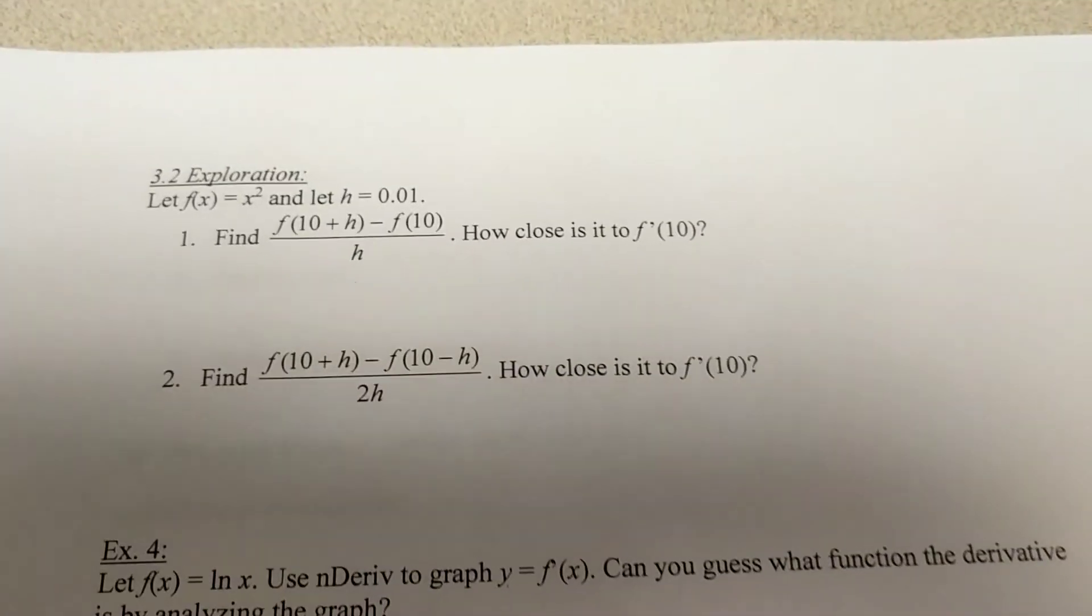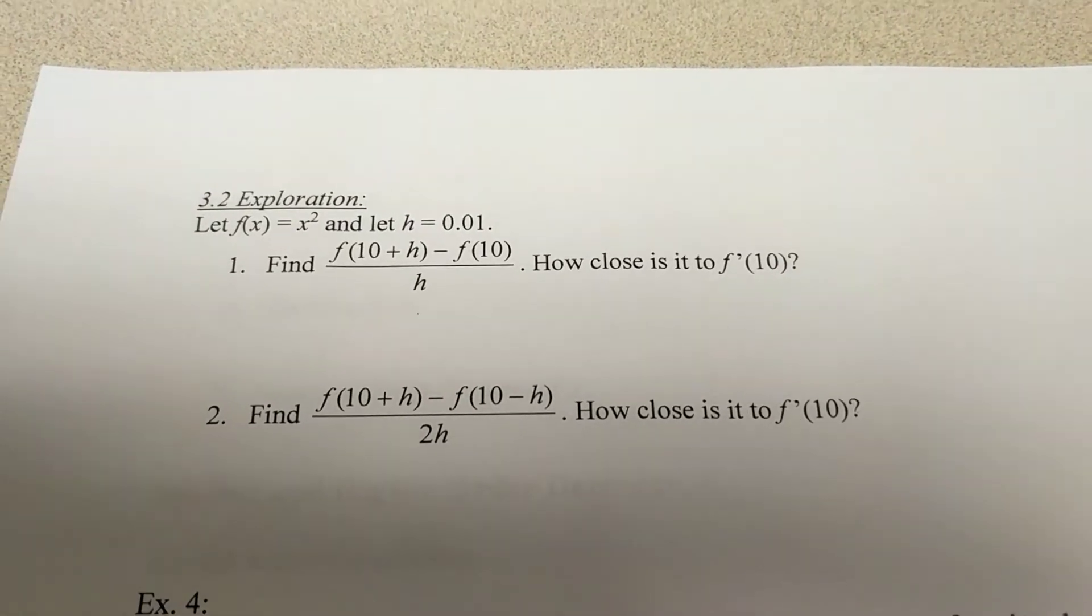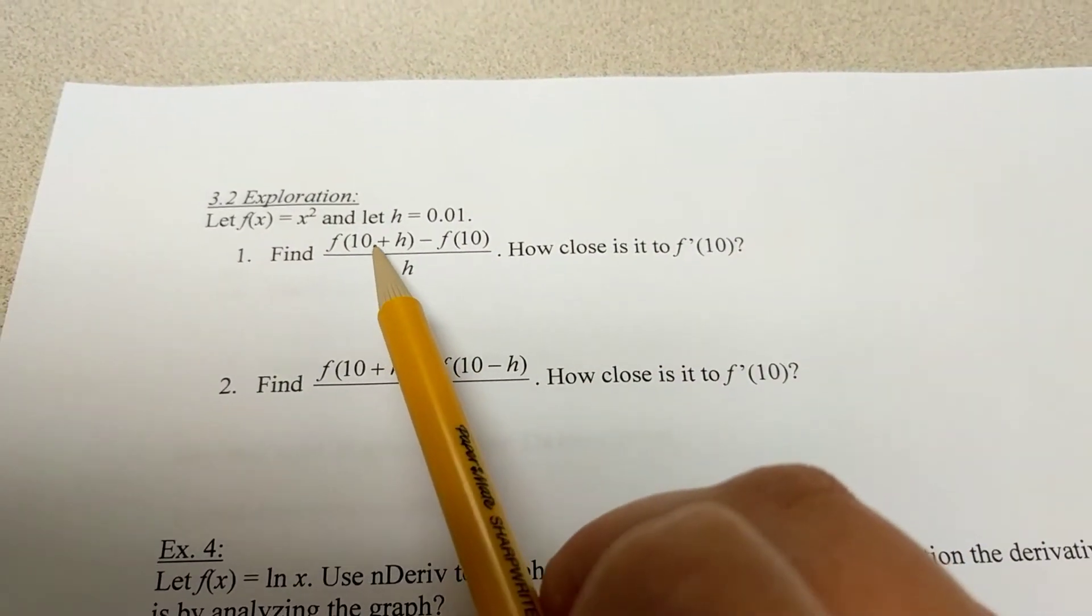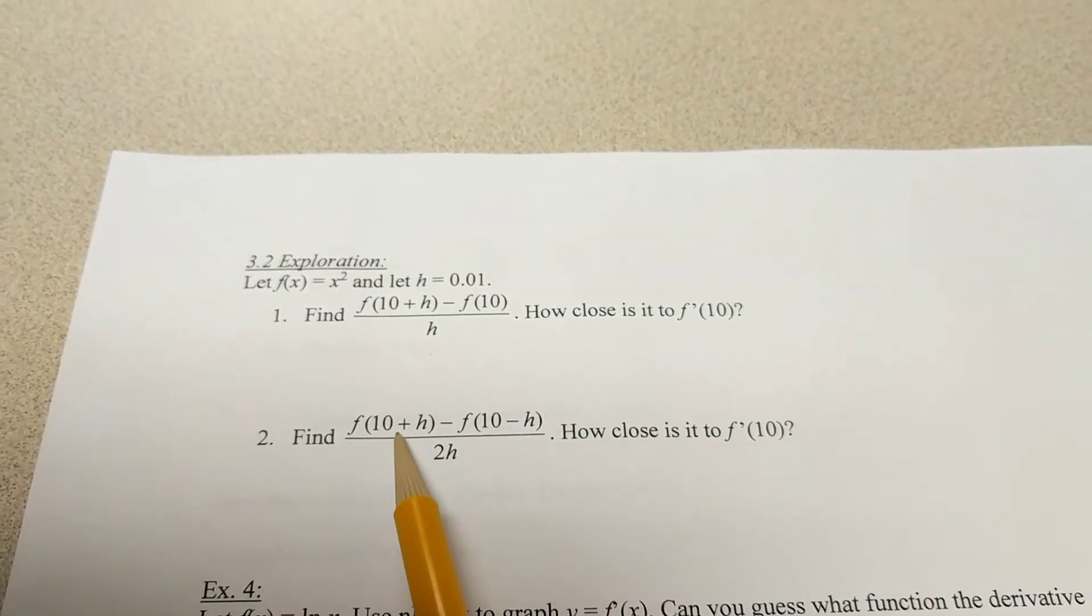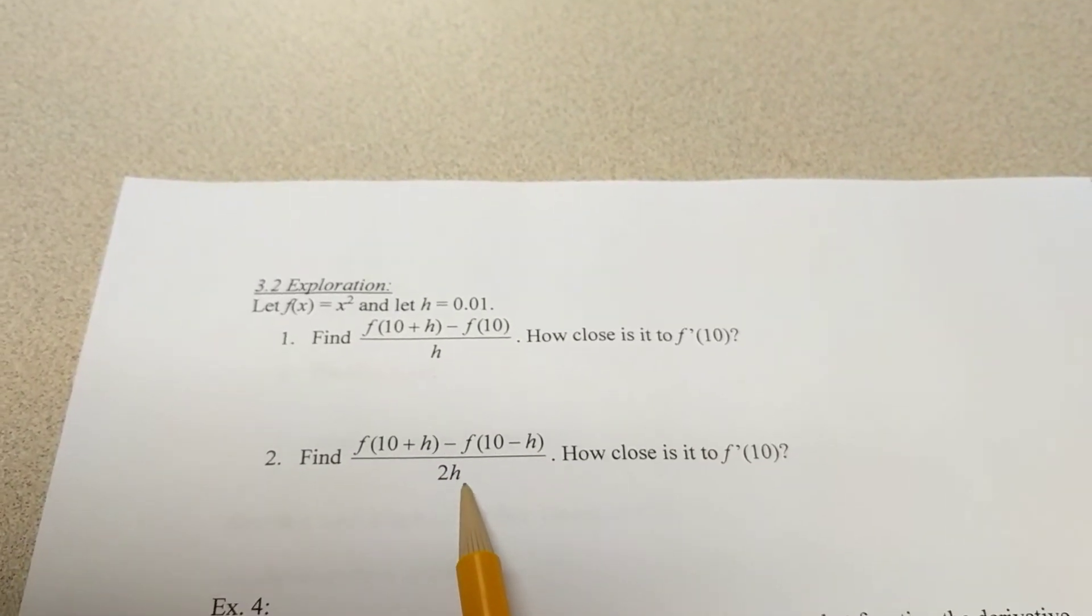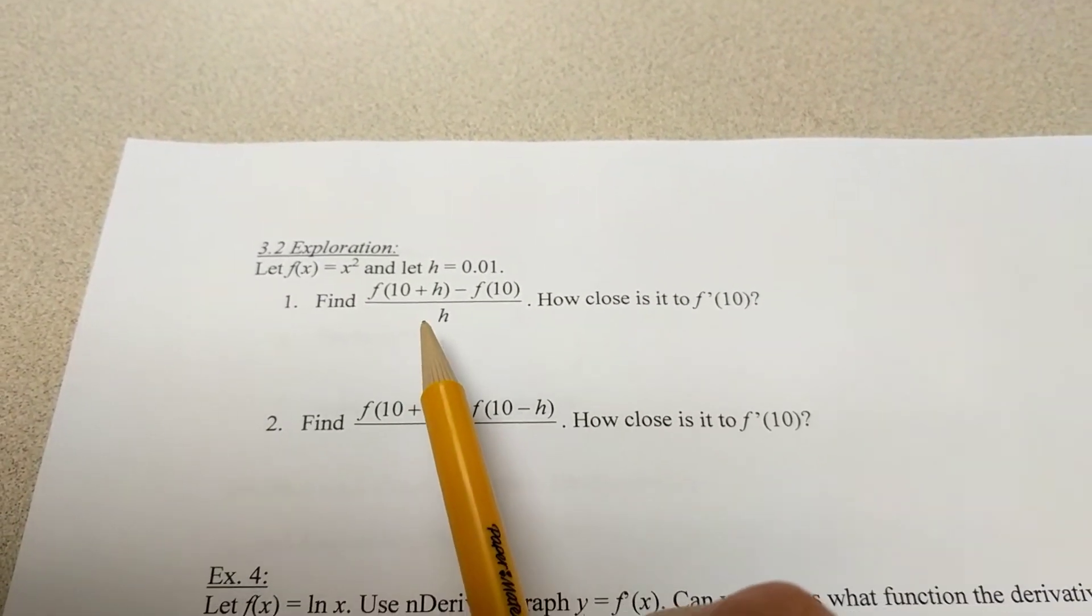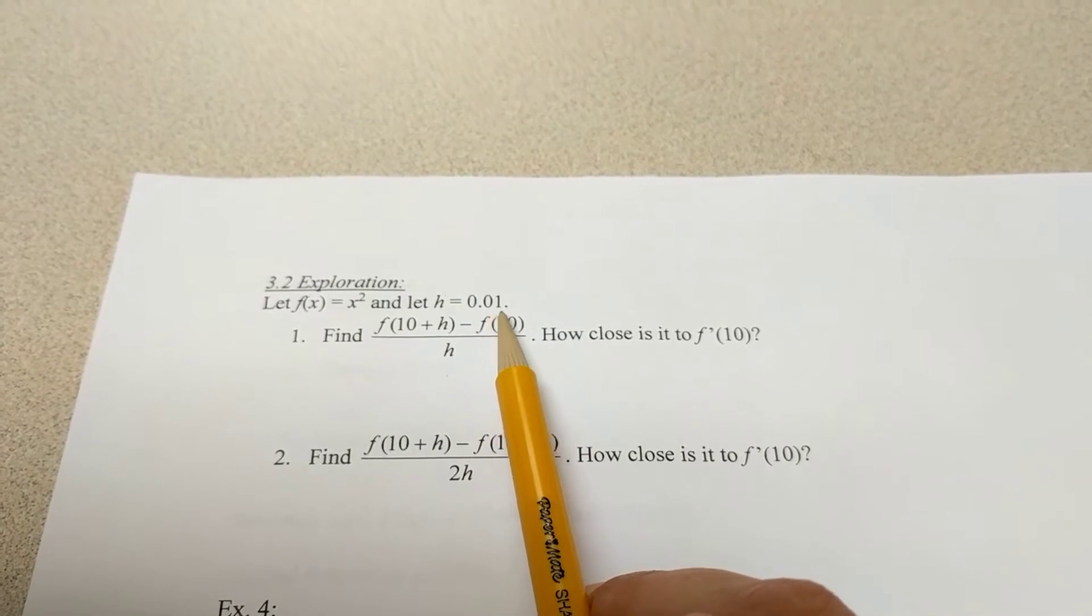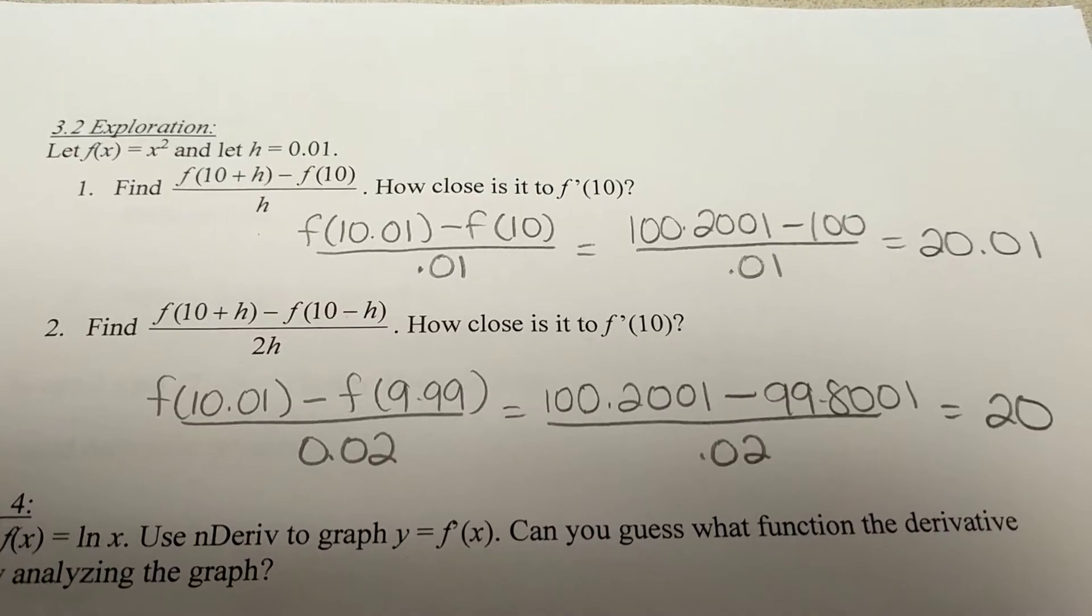So, that leads us to this exploration up here. So, this exploration actually has us go through all of these different definitions of our derivative. This is the one we're pretty used to, the f(10 + h) minus f(10) over h. And then, this one goes through what your calculator is doing. It's that symmetric. It goes to the right of 10, to the left of 10, and then it does the average of those two points. So, I want you to take a minute and I want you to use those limit definitions with the function x squared. And they're telling you to use h as 0.01 and figure out what you would get for the slope at 10.